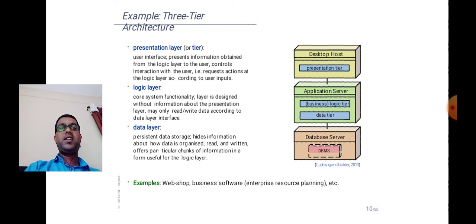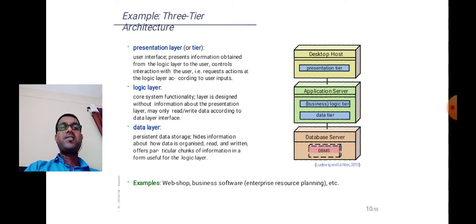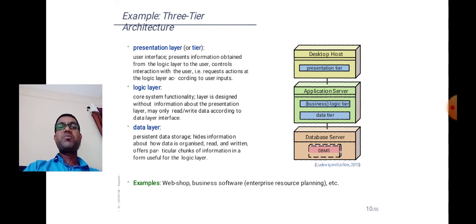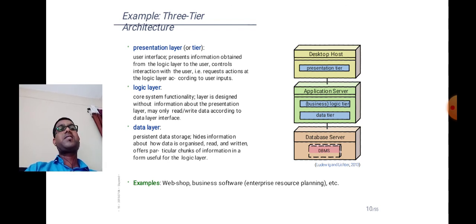The logic layer may only read or write data according to the data layer interface. The data layer is the persistent data storage — it hides how data is organized, reads and returns particular chunks of information in a form useful for the logic layer, as shown in the figure. The best example of this architecture is a web shop, and the business software enterprise resource planning (ERP).